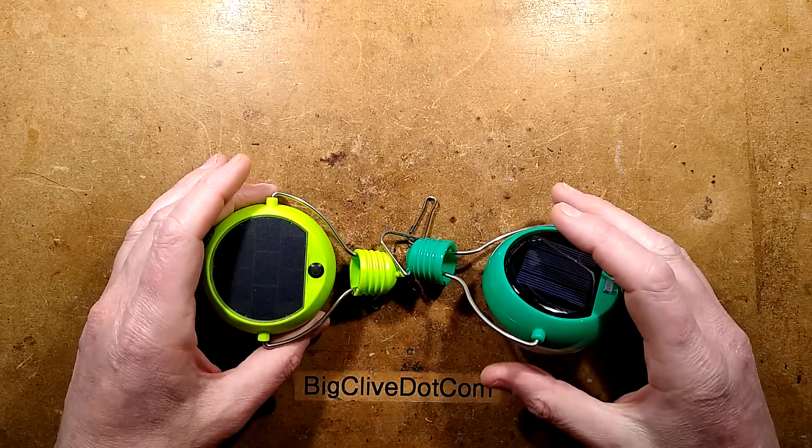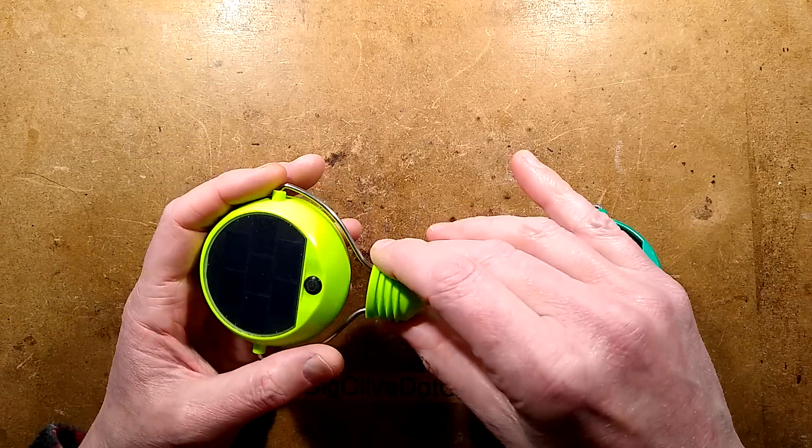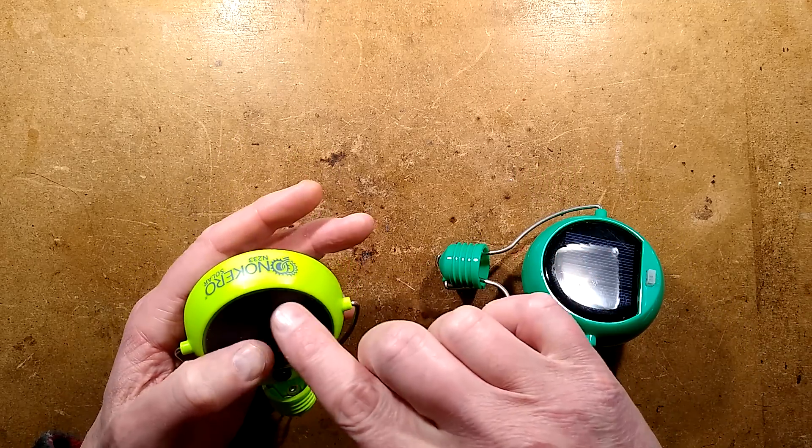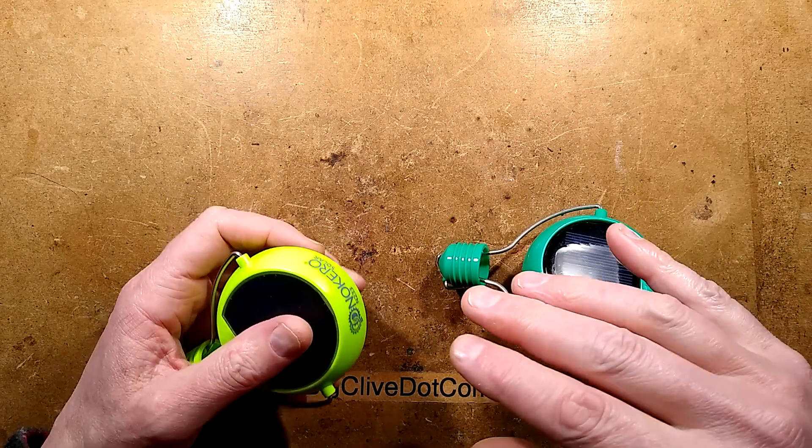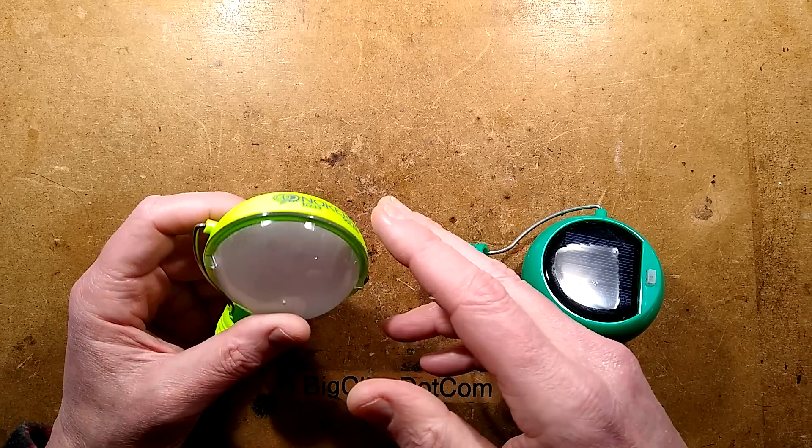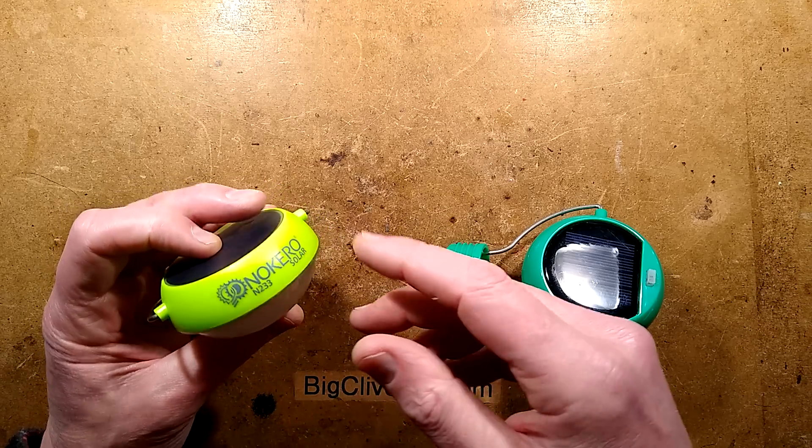Two solar lights. One is real and one is a clone. What are both solar lights? But this one is a Nokero light and I've already made a video featuring this. Nokero was, I say was because they seem to be on hiatus at the moment. It was a light that was developed for third world countries where they were using kerosene lamps, hence the name Nokero.